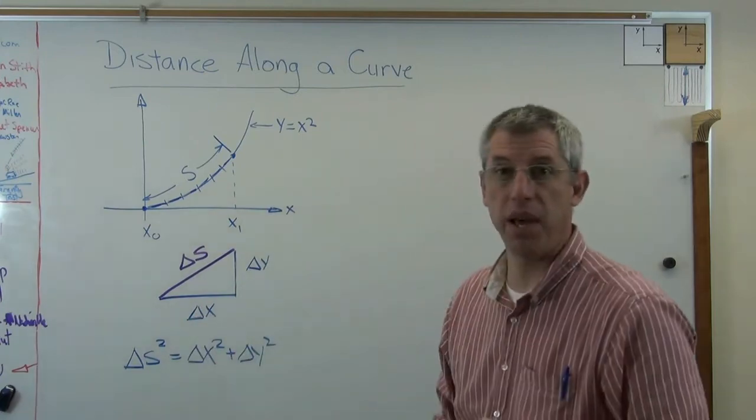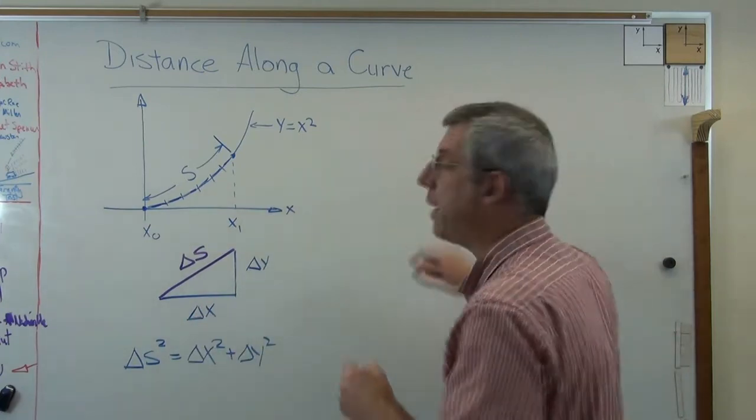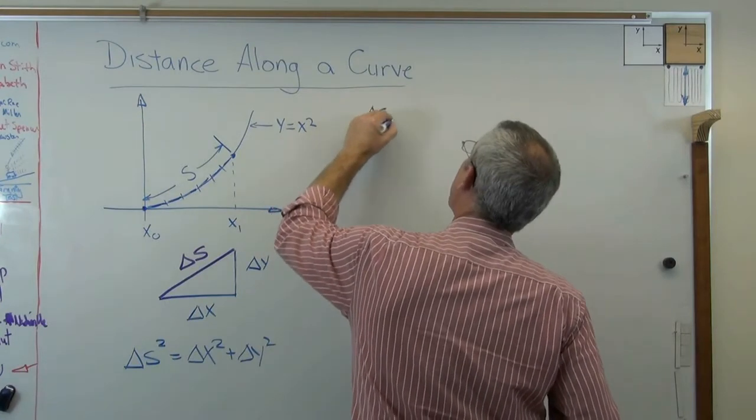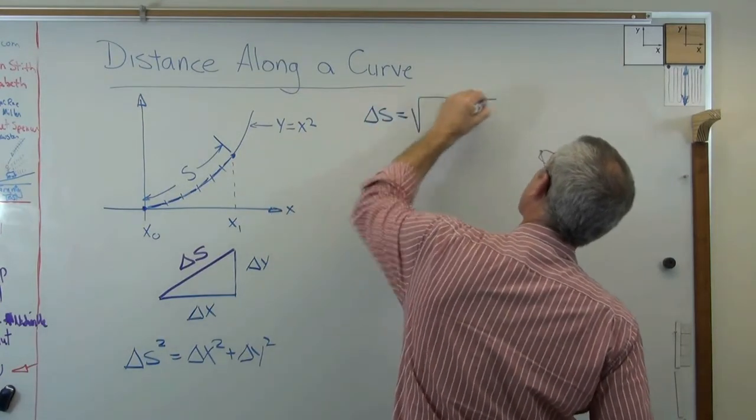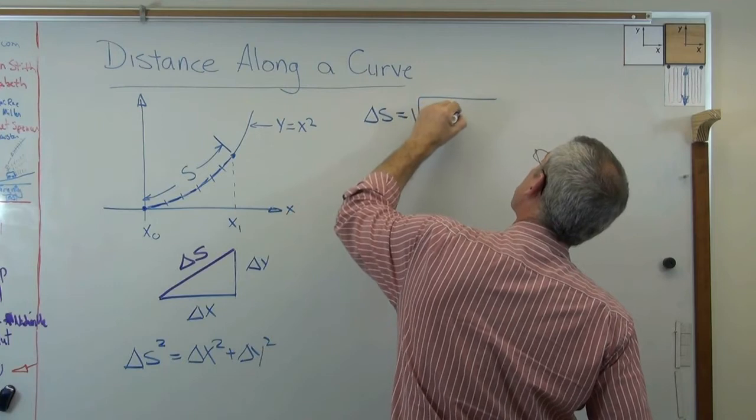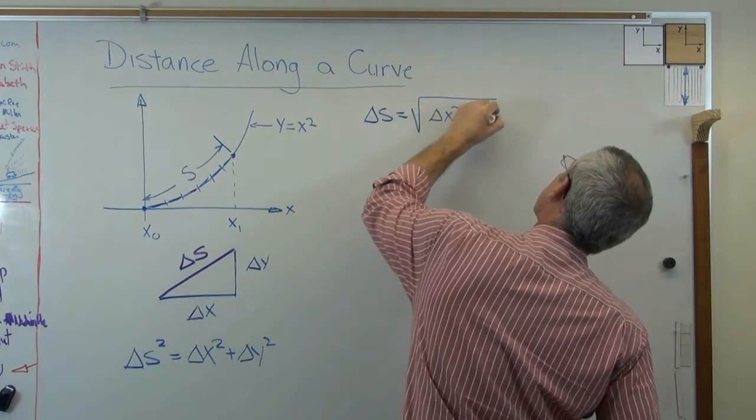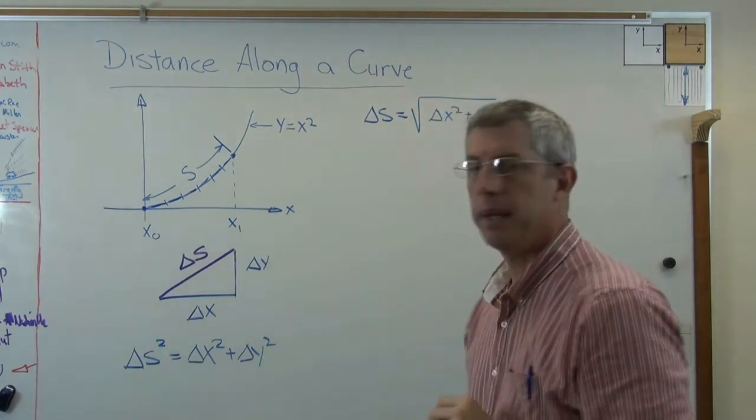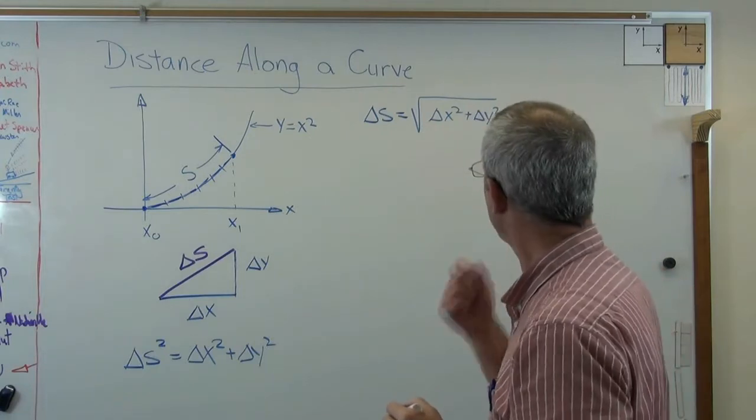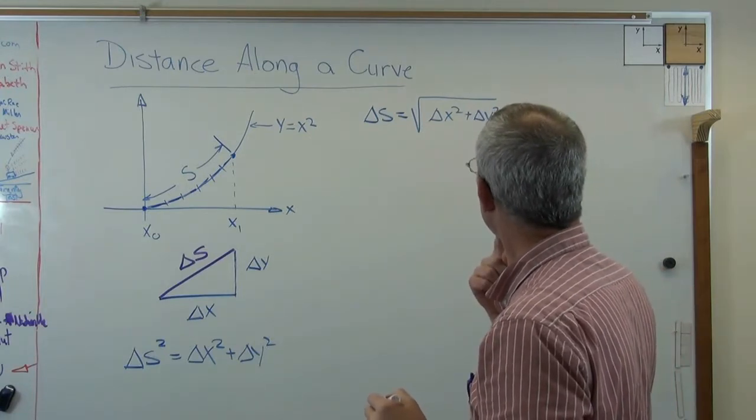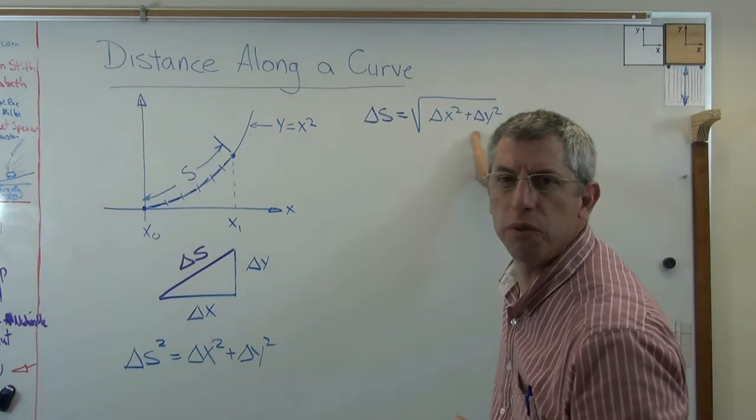Now that's the Pythagorean theorem. That's not too bad. Let's go back up here and keep going here. So delta s is the square root of delta x squared plus delta y squared. All right, that's not too bad. Well, let's do one more thing here.